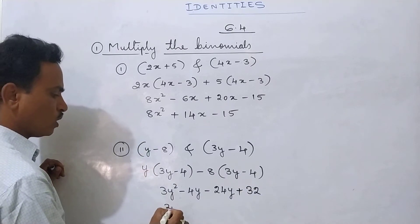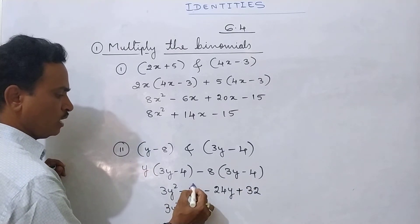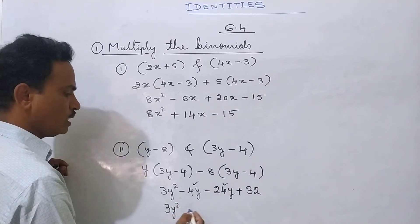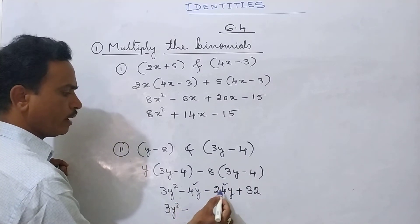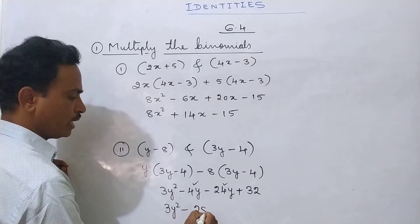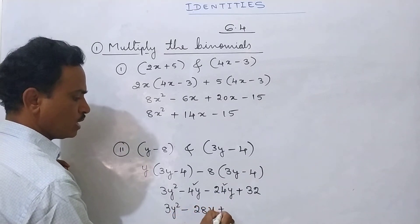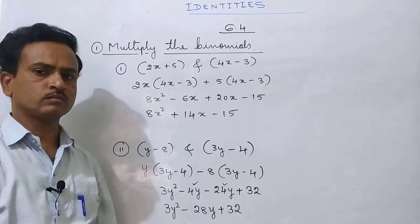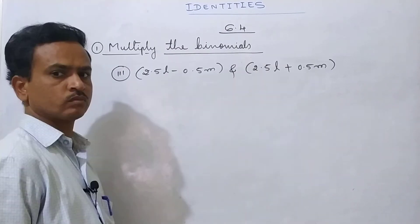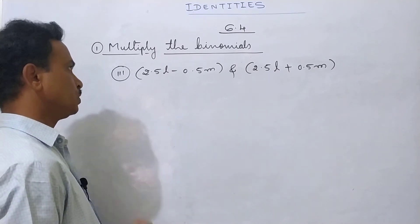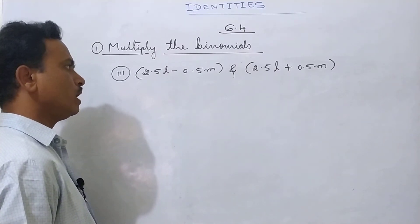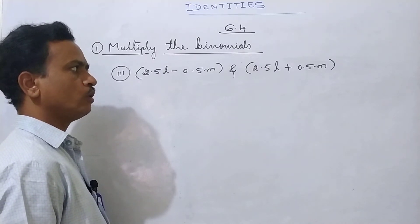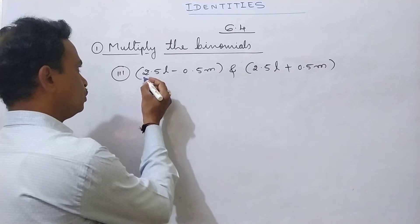Then 3y² as it is. Now minus 4y minus 24y — both are negative sign, keep minus sign and add: 24y plus 4y becomes 28y, plus 32. So the answer is 3y² - 28y + 32.